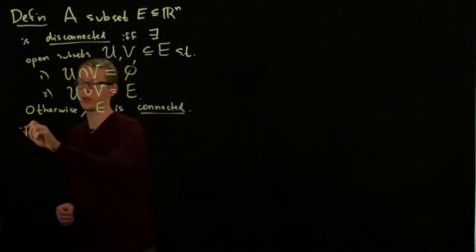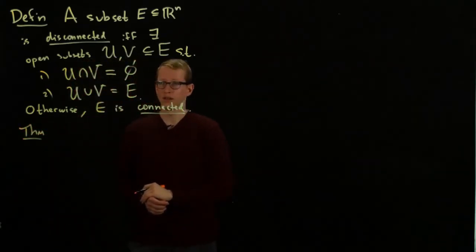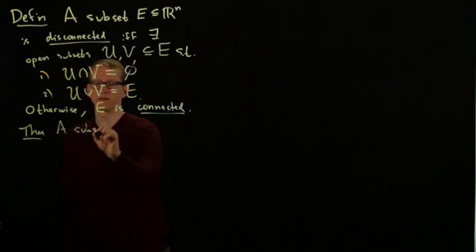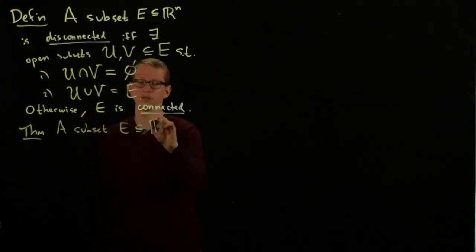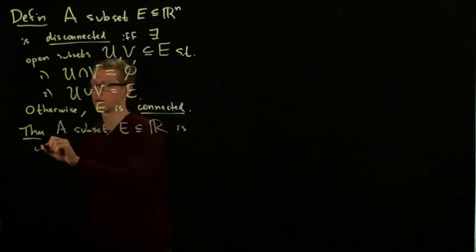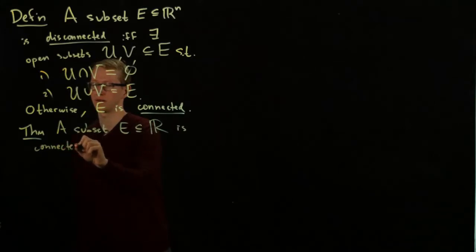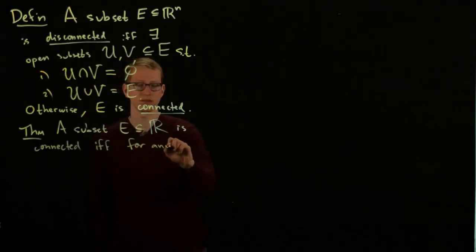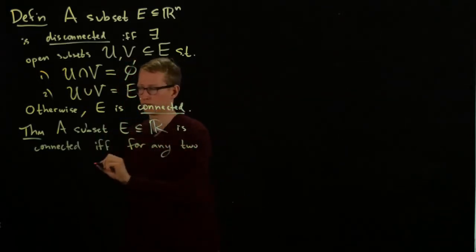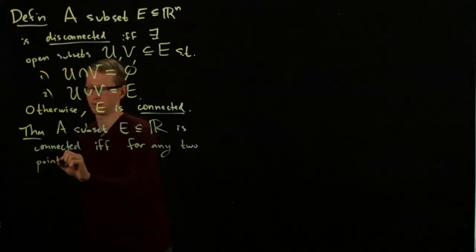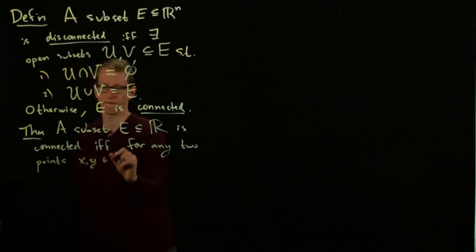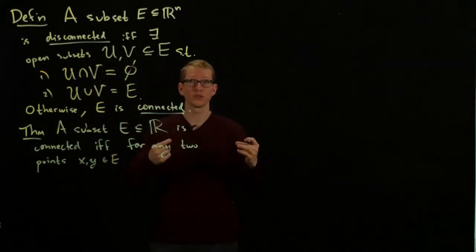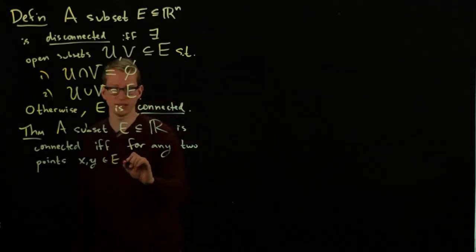We have an important theorem in one dimension that states a subset E of R^1 is connected if and only if for any two points X and Y in E, I can draw the straight line between X and Y, and that's also contained in my subset E.